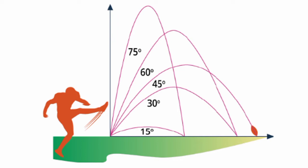In angle-launch projectile motion, the launch angle plays a vital role in Sepak Takraw. A 45-degree angle allows the ball to travel a significant distance while also giving enough height to clear the net or reach the desired target. This angle maximizes the range of the projectile while maintaining a relatively flat trajectory, influencing the speed, accuracy, and strategic positioning of the players. By mastering these different angles, players can enhance their gameplay and create opportunities for their team to excel.